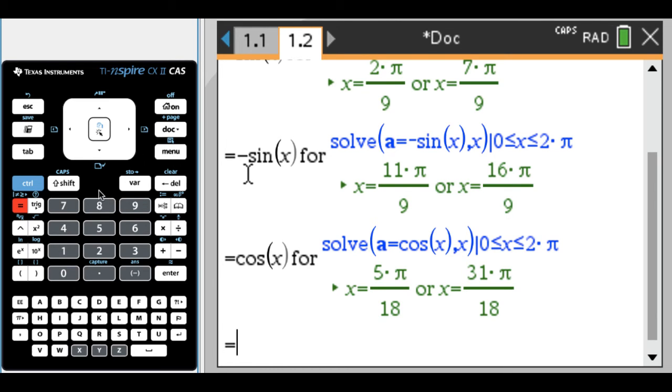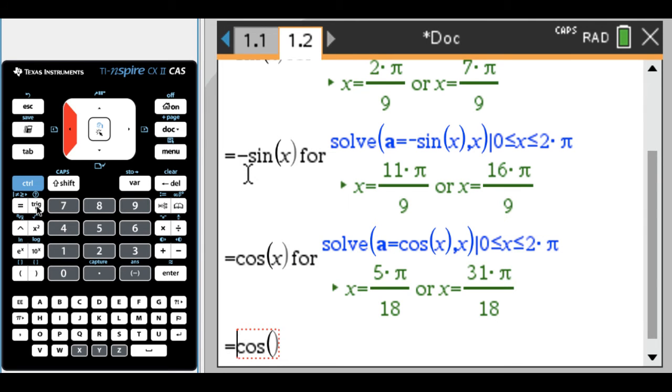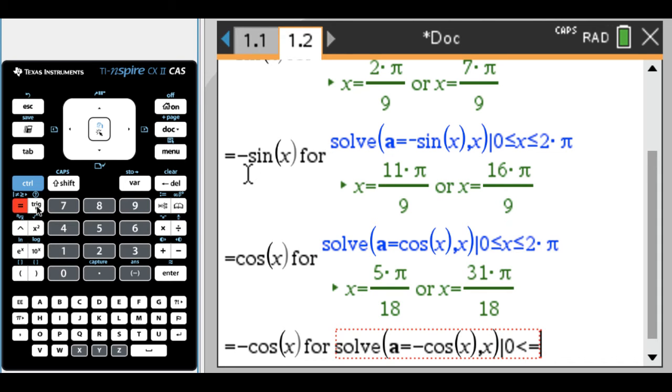Equals. Finally, it will be the negative of the cosine of x. I could have just made a math box there. And then 4. And now I need to solve one more time. Solve A equals negative cosine of x, comma x. Outside of the parentheses for solve but still in the math box, such that zero less than or equal to x less than or equal to 2 pi. So it might take you a little while to type all this in, and right now it looks kind of messy. I'm going to hit enter.